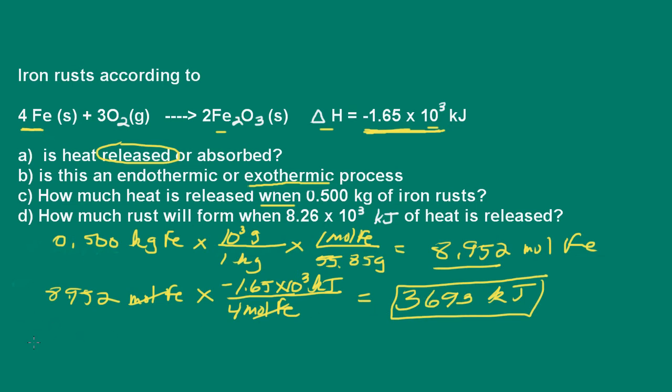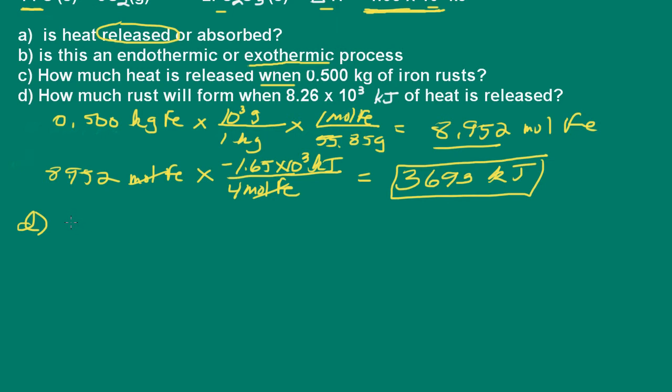So let's go to part D, and in part D, they ask how much rust will form when 8.26 times 10 to the third kilojoules of heat is released. Well, in this part here, let's go ahead and determine the number of grams of rust that will form. We have 8.26 times 10 to the third kilojoules of heat released.